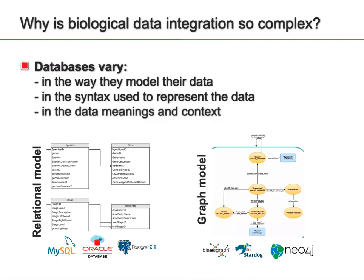Most importantly, as most of these databases are domain-specific, they also have different contexts and consequently different data meanings. For example, in a gene expression database, the distinction between the concept of a gene and a protein is quite important — you cannot say the protein is expressed, but the gene is expressed. For an orthology database, even though it works at the protein level, you may say a gene is orthologous to another gene. When integrating gene expression and orthology databases, you have to deal with this kind of semantic conflict.